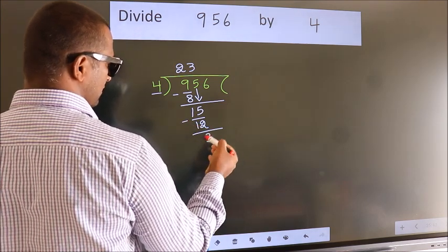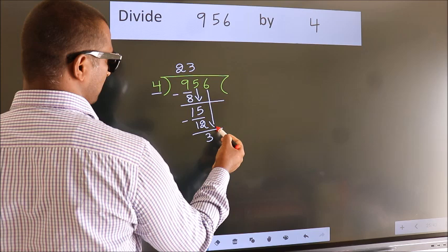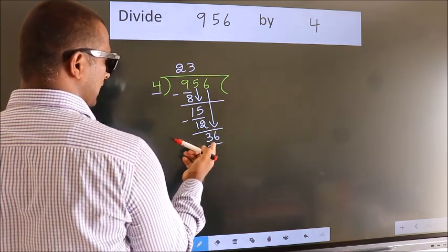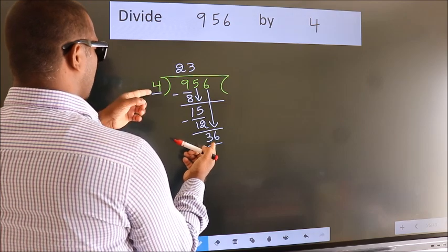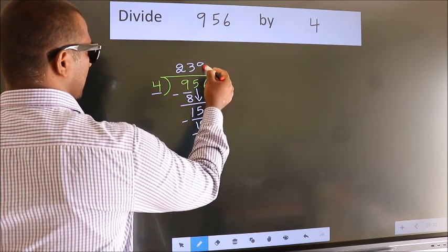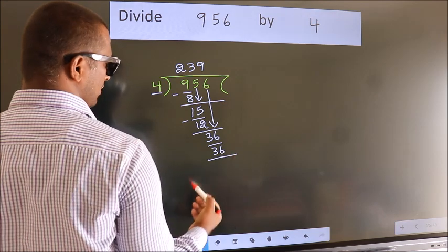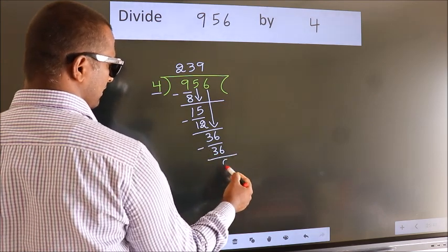After this, bring down the next number. So 6 down, making 36. When do we get 36 in the 4 table? 4 times 9, 36. Now we subtract and get 0.